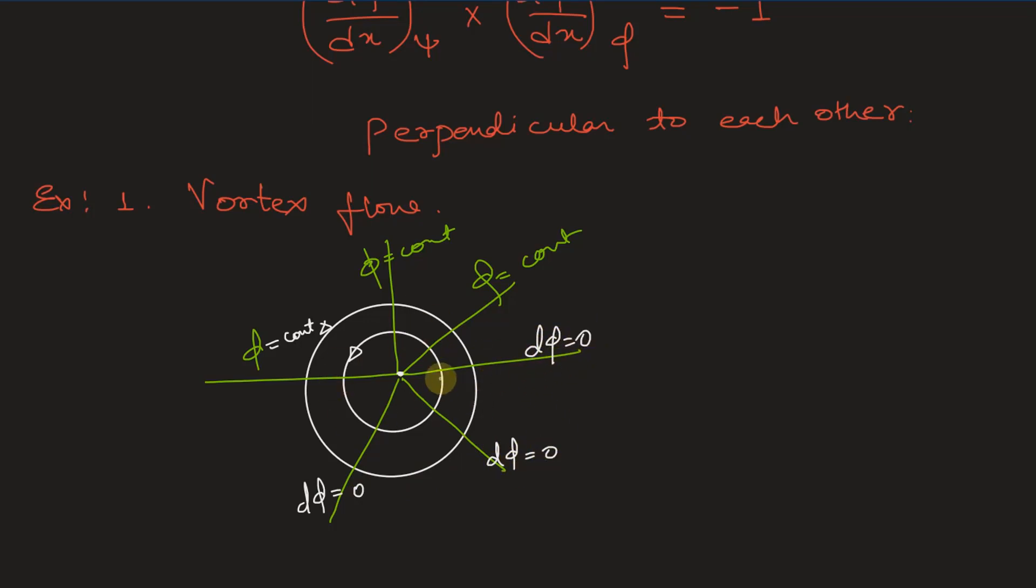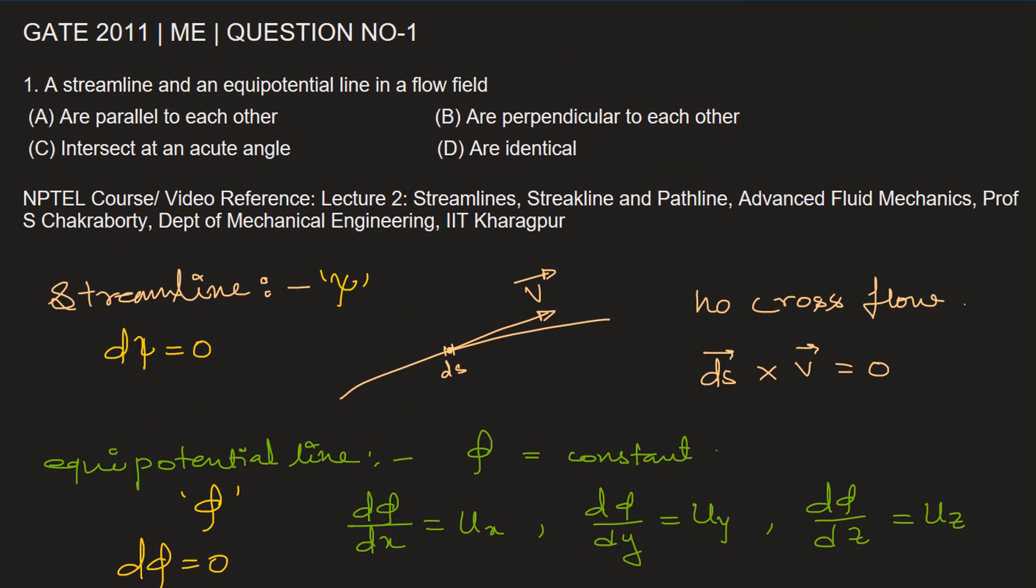This is exactly opposite for source flow or sink flow. For uniform flow where dphi is zero, streamlines will be in this direction. We can now choose the correct option.